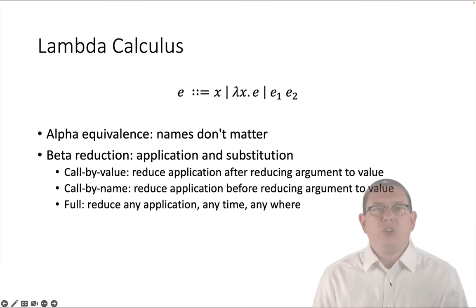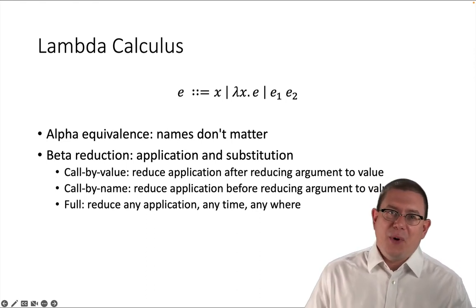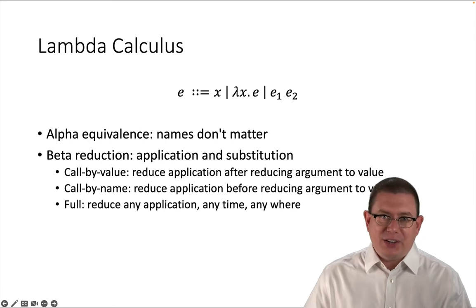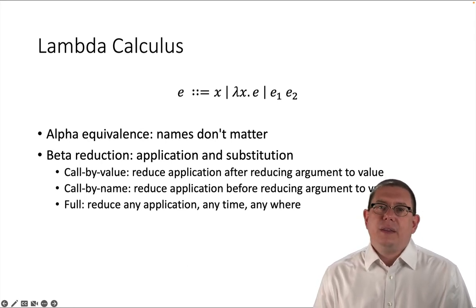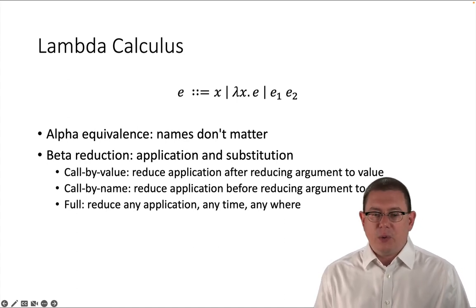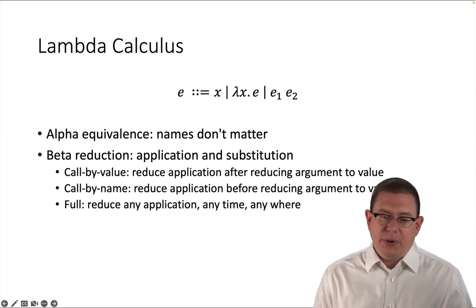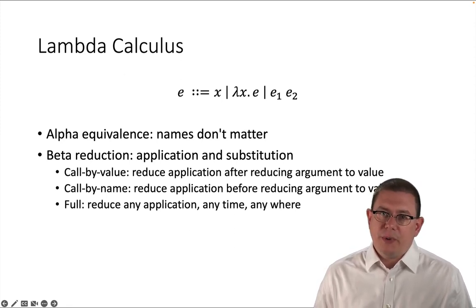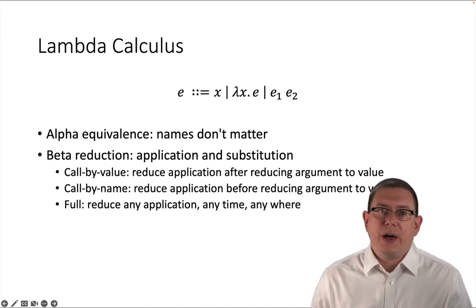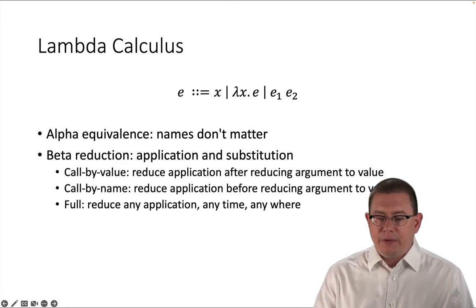So what I'm getting at here is the notion of call by value versus call by name. In call by value beta reduction, we don't reduce the application of a function to its argument until we've already reduced the argument to a value. So we have to compute that one plus one plus two down to a four before we do the function application. With call by name, we can reduce the application before reducing the argument to a value. This is called full beta reduction. This allows you to choose at which time you do any of the applications around anytime, anywhere.